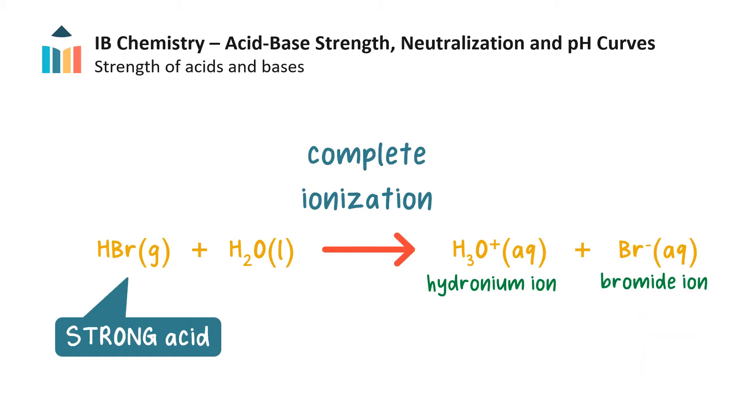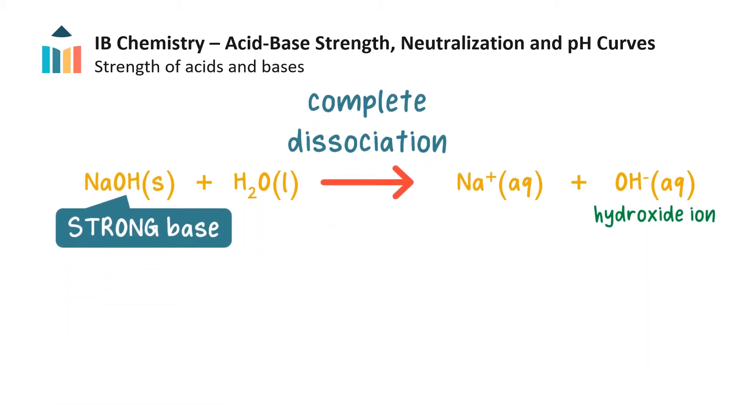However, some acids, such as hydrobromic acid, are strong acids, meaning they ionize fully or completely into their ions in solution. The equilibrium lies so far to the right that the reverse reaction is considered negligible. The conjugate base of a strong acid, in this case the bromide ion, does not readily accept a proton from the hydronium ion to reform the acid. And so, strong acids are good proton donors.